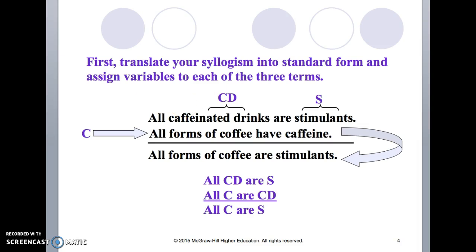What's the first step? Well first you're going to translate your categorical syllogism into standard form. Let's say we have an argument we extract from that two premises and a conclusion.